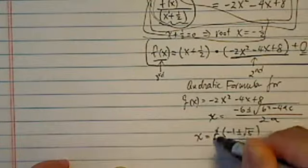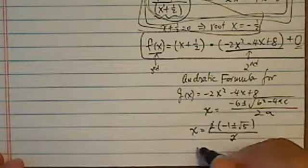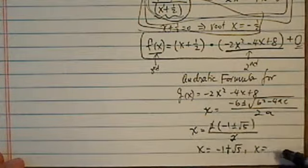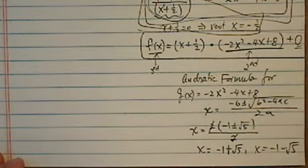So two and two cancels. So my two roots are x equal to minus one plus radical five, and x equal to minus one minus radical five.